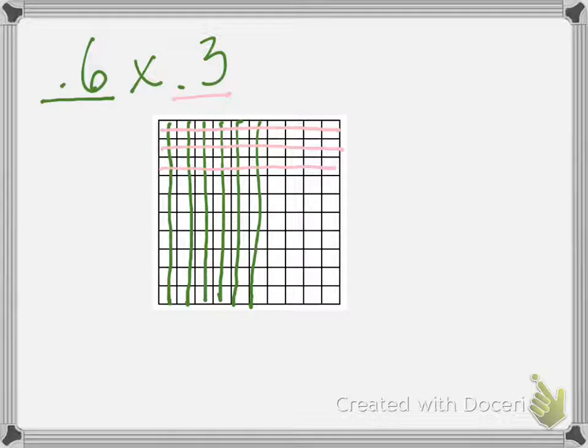So then if we said, what is 3 tenths of the 6 tenths? Those are the hundredths squares where they both cross over. So we would just want to look at these squares right in here because both our lines are in those hundredths squares. So if we count those, 1, 2, 3, 4, 5, 6, 7, 8, 9, 10, 11, 12, 13, 14, 15, 16, 17, 18. We have 18 hundredths. So the product of 6 tenths times 3 tenths is 18 hundredths. So 3 tenths of the 6 tenths is 18 hundredths.